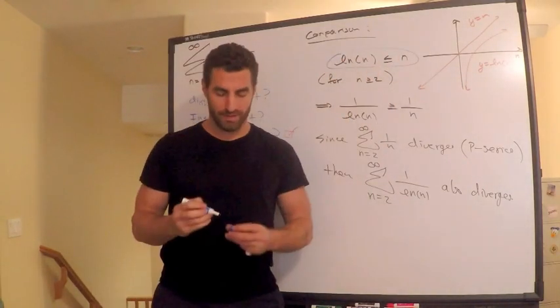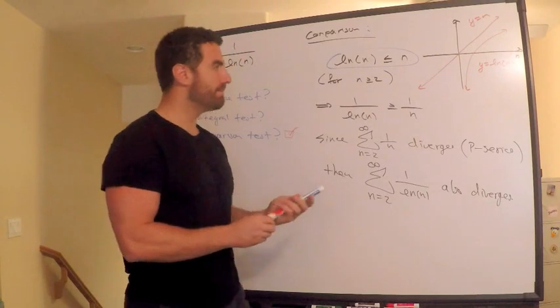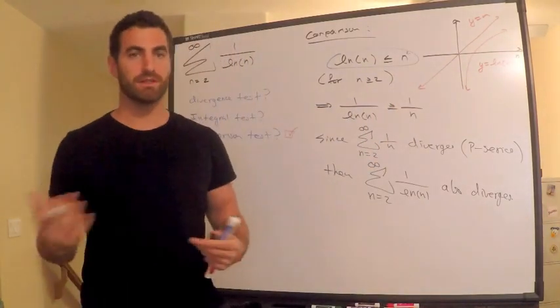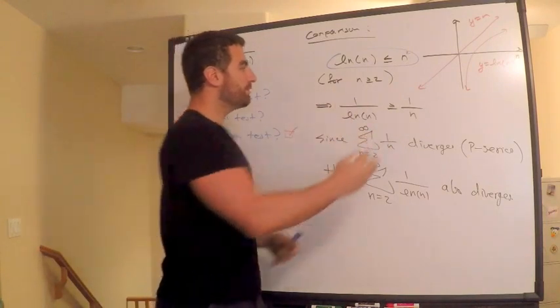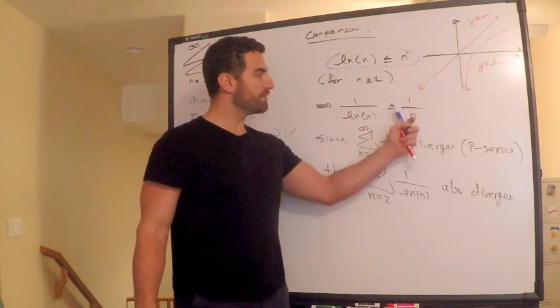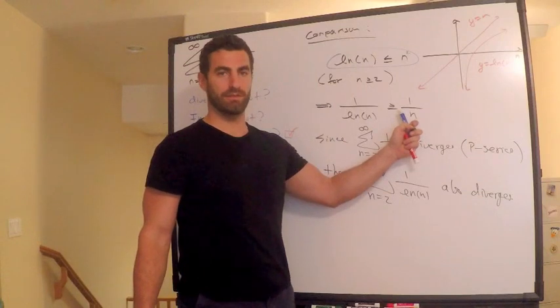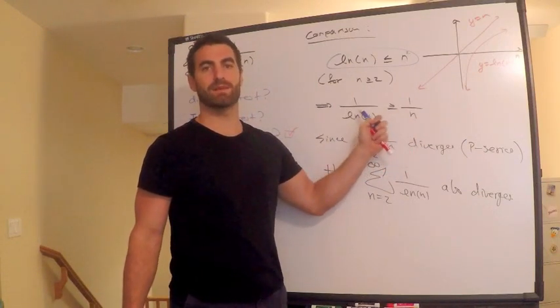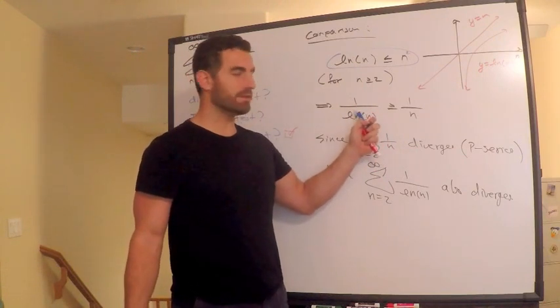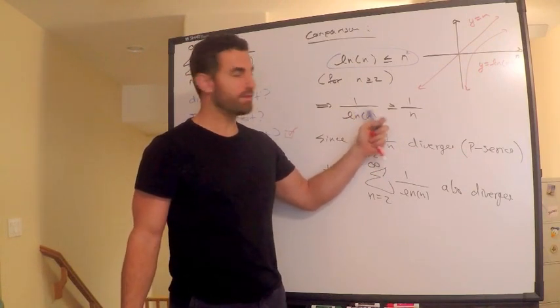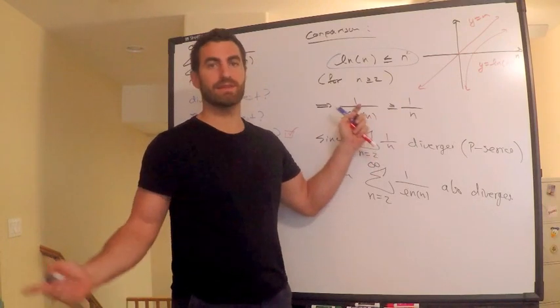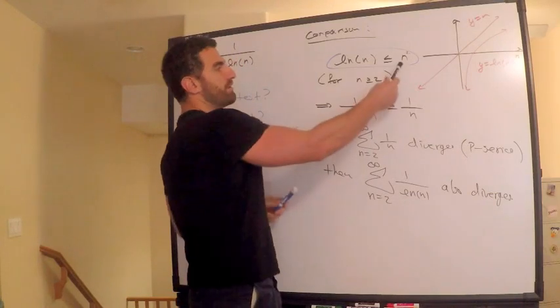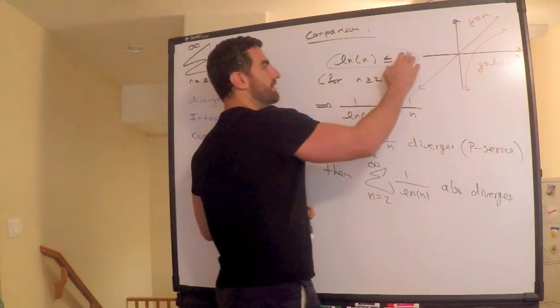What if I don't initially guess this correctly? What if I instead maybe made this comparison, n squared? And in an exam situation, you may do this. Well, what happens when I take the reciprocal? This would be squared. But this over here would be a convergent p series. If I have a convergent p series which is less than something else, this convergent is something bigger than that. I can't say anything about it. So it doesn't lead me anywhere. It doesn't help me at all.